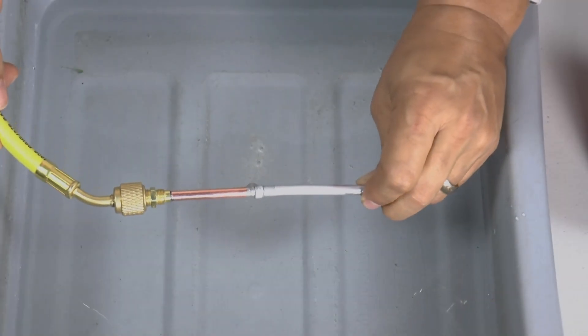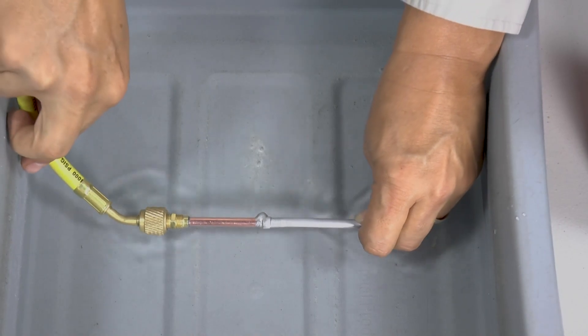To test for leaks at the joint we have soft soldered, we will now submerge it in this tub of water.